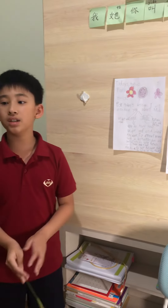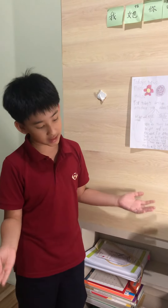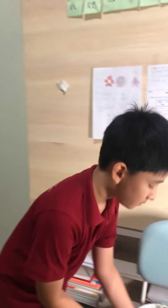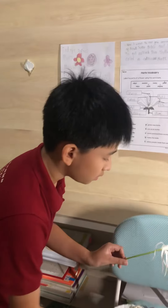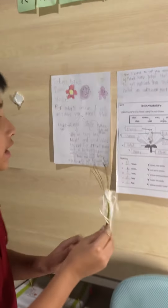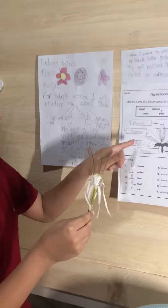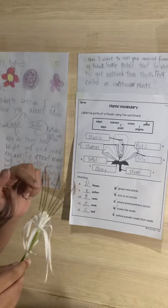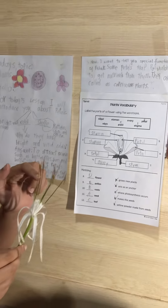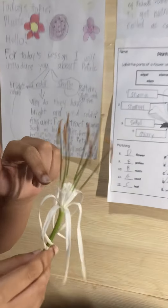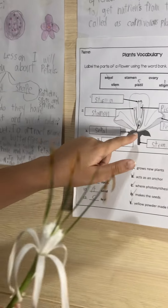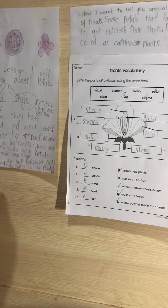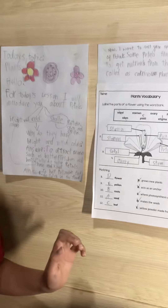Let me tell you what pollen is. Over here, at the stamen, it has a little bit of pollen. But when the pollen falls into the ovary, then it will produce fruit.